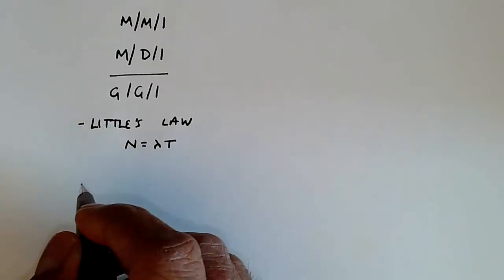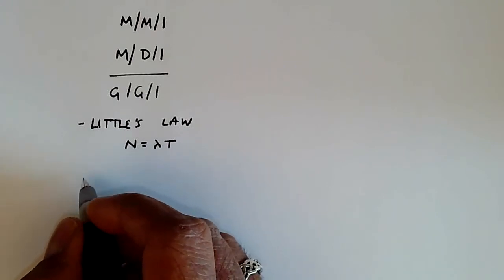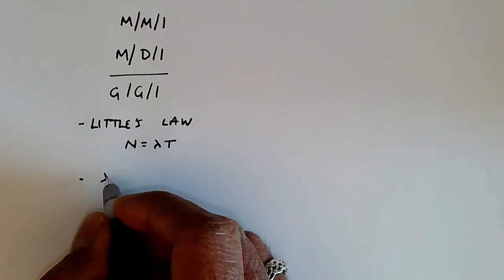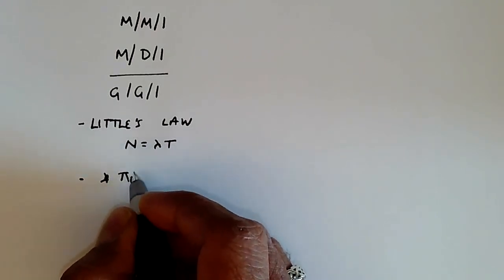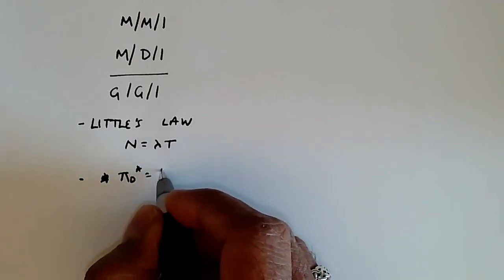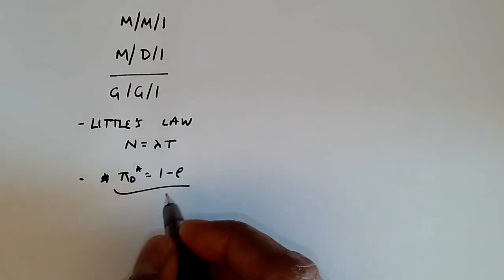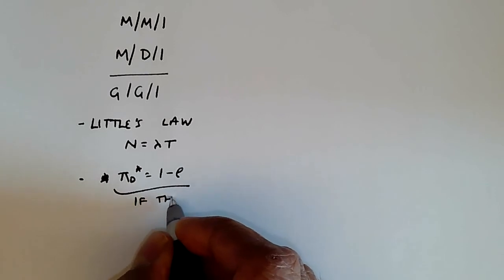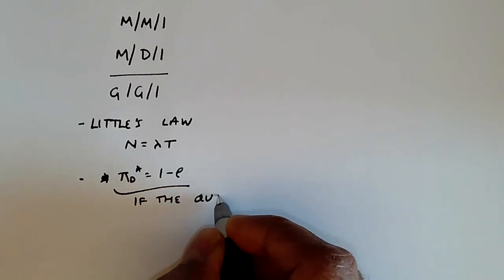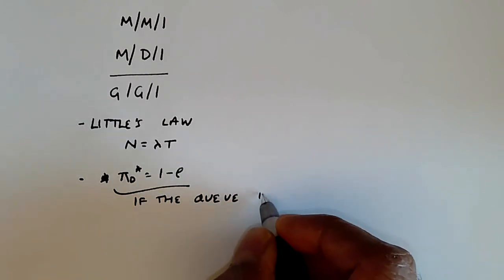And the other thing we can say is that the probability of being in state zero, pi zero star, is given by one minus rho. And this is true if the queue is unbounded.